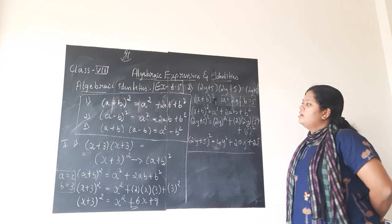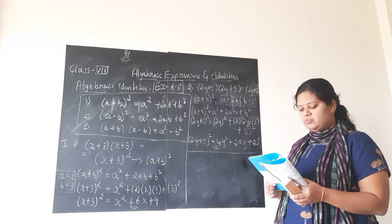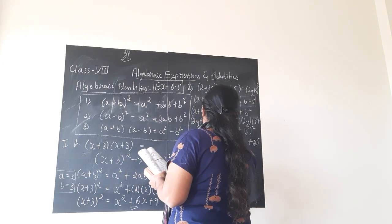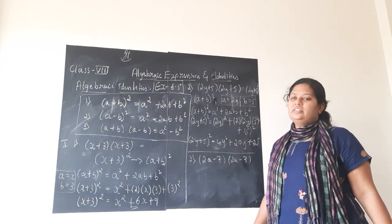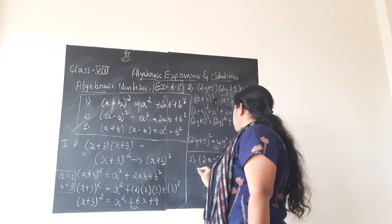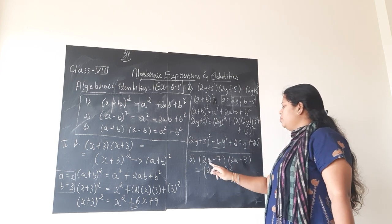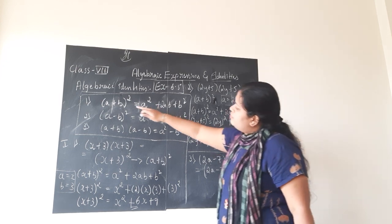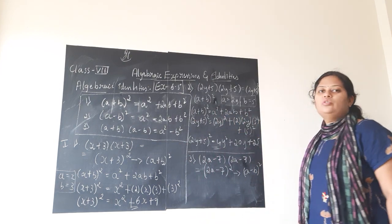We should stop the solution at this point; we cannot simplify further. Third question: 2a minus 7 into 2a minus 7. Here also the same terms are repeated as in the first and second, but the change you observe is that both brackets have a minus sign. So I can write it as 2a minus 7 whole square, which is of the form a minus b whole square.